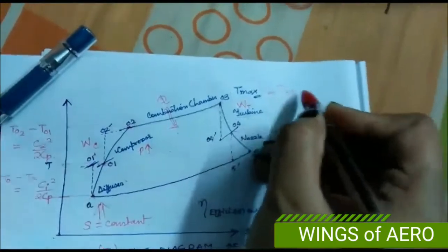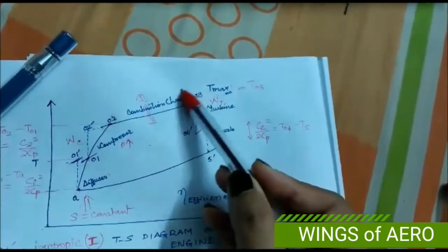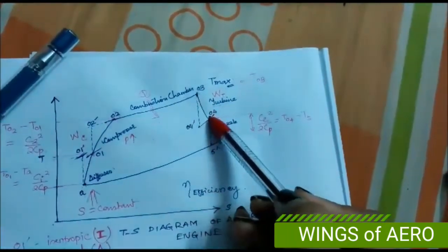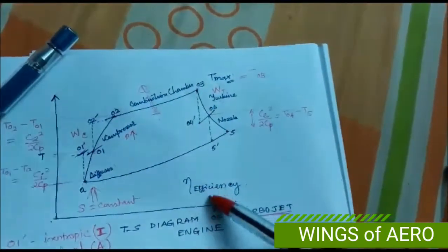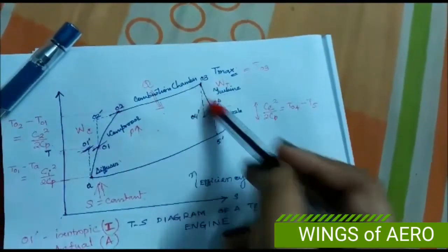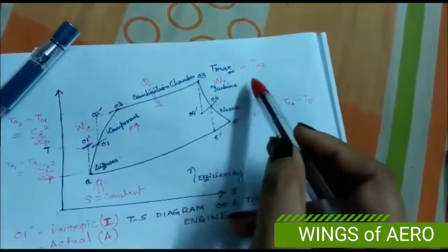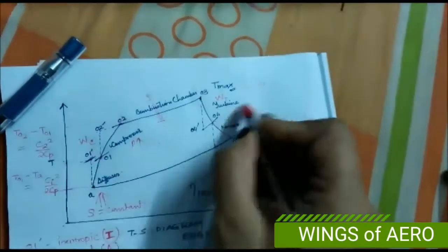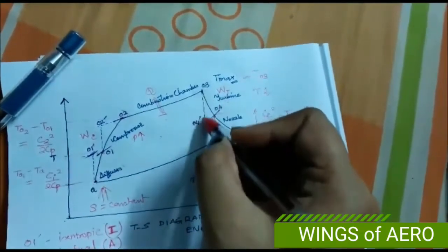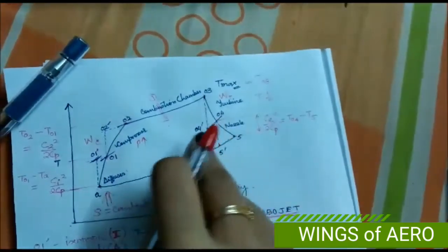After the combustion chamber, the hot gas enters the turbine. As it passes through the turbine, entropy increases while temperature gradually decreases. The dotted line to point 0-4 dash represents the isentropic process where S is constant, while the actual process shows the thick line to point 0-4.